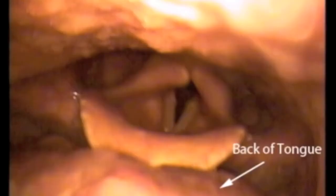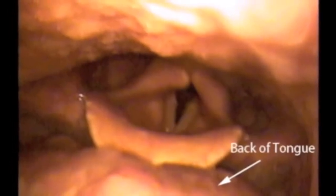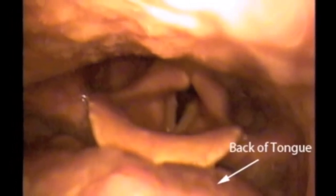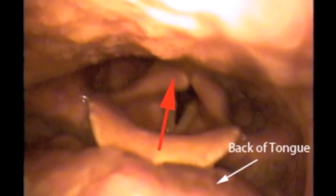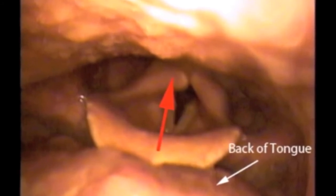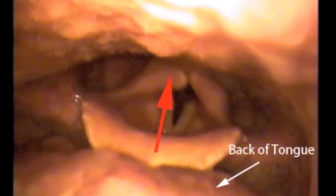Here is what it looks like from the inside. Watch how the tongue falls into the airway resulting in a partial obstruction. When the tongue falls in the direction of the red arrow, the narrowing results in mucosal vibration resulting in a snore.